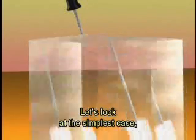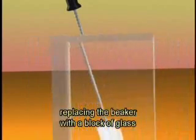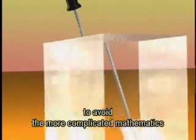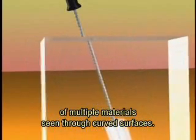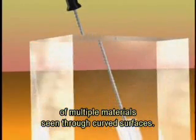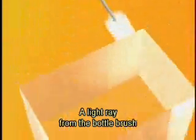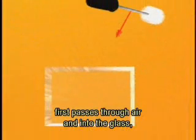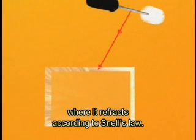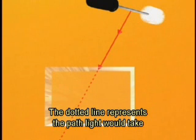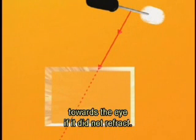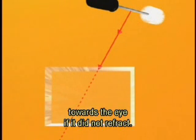Let's look at the simplest case, replacing the beaker with a block of glass to avoid the more complicated mathematics of multiple materials seen through curved surfaces. A light ray from the bottle brush first passes through air and into the glass where it refracts, according to Snell's Law. The dotted line represents the path light would take towards the eye if it did not refract.